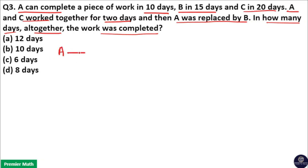Here A can complete a work in 10 days, B can do the same work in 15 days, C can complete the same work in 20 days. Now all are doing the same job.